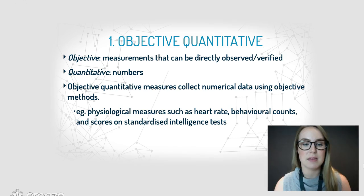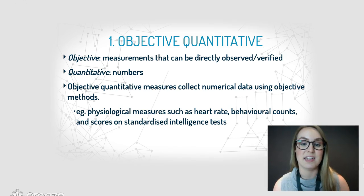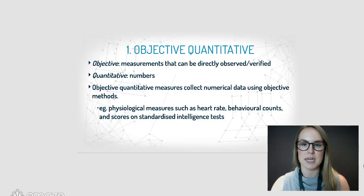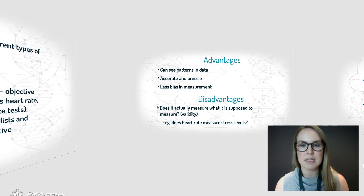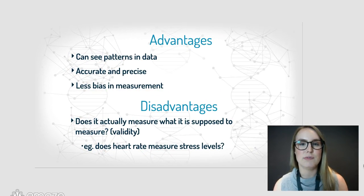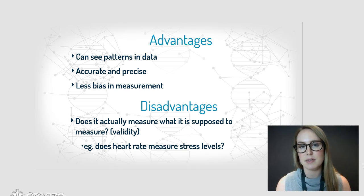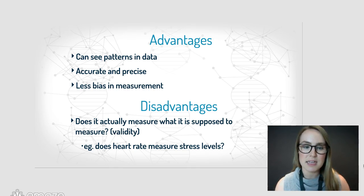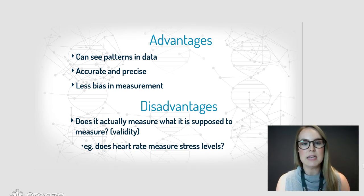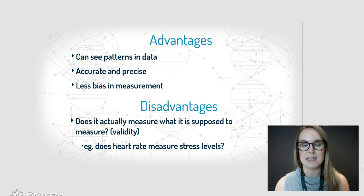Examples of objective quantitative measures might be things like heart rate, behavioral count, or scores on standardized intelligence tests — things where you're getting numerical data that's objective. The advantages of this method are: you can see really clear patterns in data because it's quantitative, it's very accurate and precise because you're not relying on opinions but getting actual measurements, and because they're objective, they are less biased.